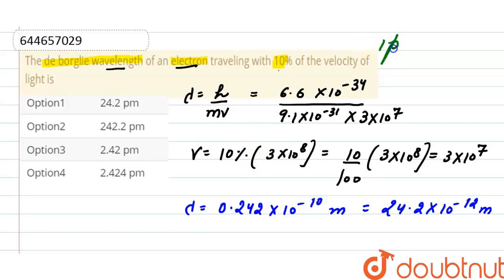As we know, 1 picometer is equals to 10^-12 meter, so here the de Broglie wavelength is equals to 24.2 picometers.